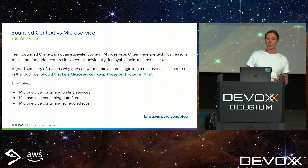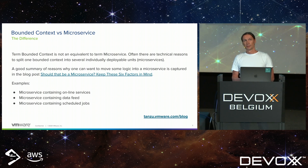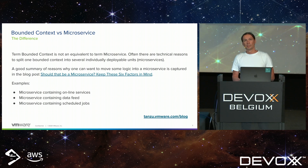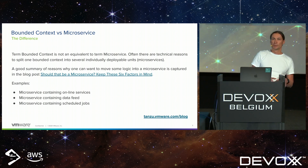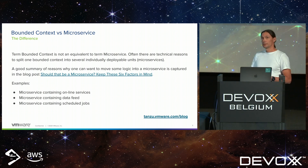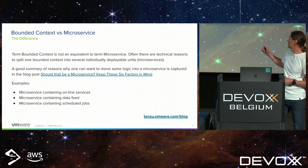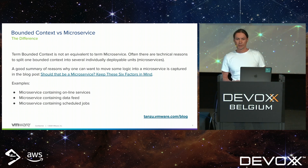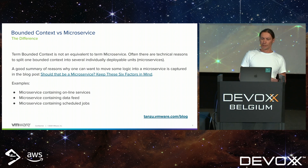But this is not always the case. Often there are technical reasons to split a bounded context into multiple deployable units — microservices. For example, we may want to separate online services from housekeeping jobs running periodically. There is a very good blog post describing different factors one can apply to decide whether something should be built as a microservice. It's called 'Should that be a microservice? Keep these six factors in mind,' and you can find it on the Tanzu website. So keeping in mind that a bounded context is not equivalent to a microservice, we can start with the first example.